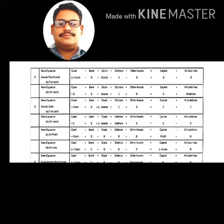When goods are sold for cash, cash increases and goods (stock) decrease. If there is a profit, it is added to capital; if there is a loss, it is deducted from capital. If sold at cost price, there is no change in capital.